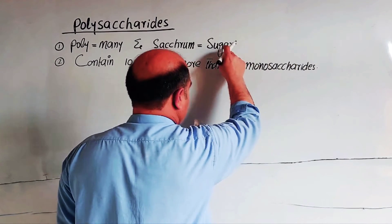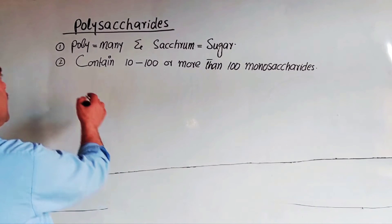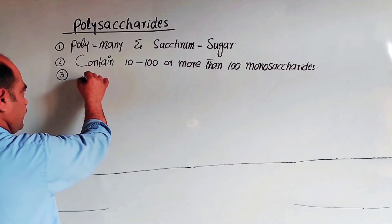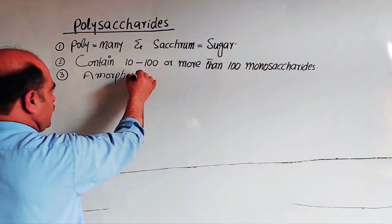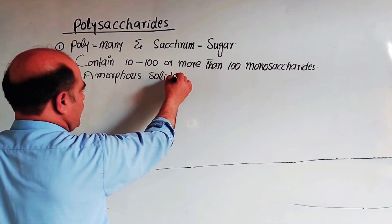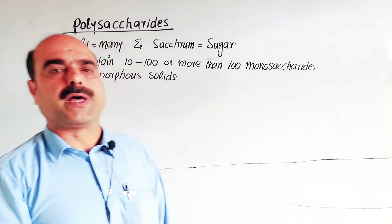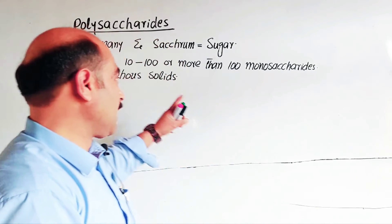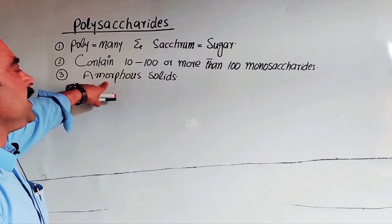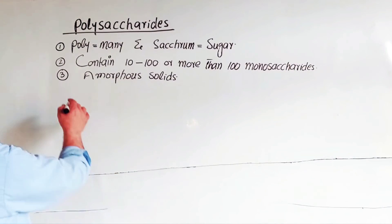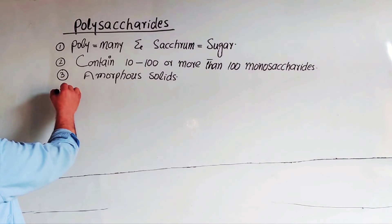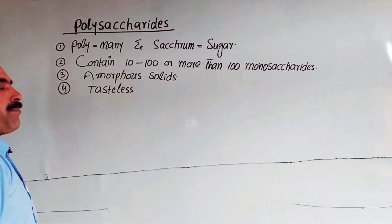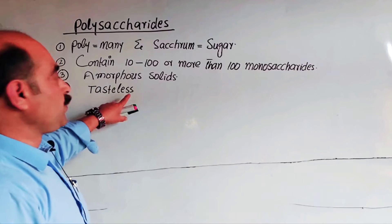Monosaccharides are simple sugar units. Moving to the physical properties of polysaccharides: these are amorphous solids. Amorphous means they do not have a regular three-dimensional arrangement of particles, but rather a random arrangement of particles — that is why they are amorphous. Amorphous also means powdered. The third property is that polysaccharides are tasteless, unlike monosaccharides and oligosaccharides which have a sweet taste.